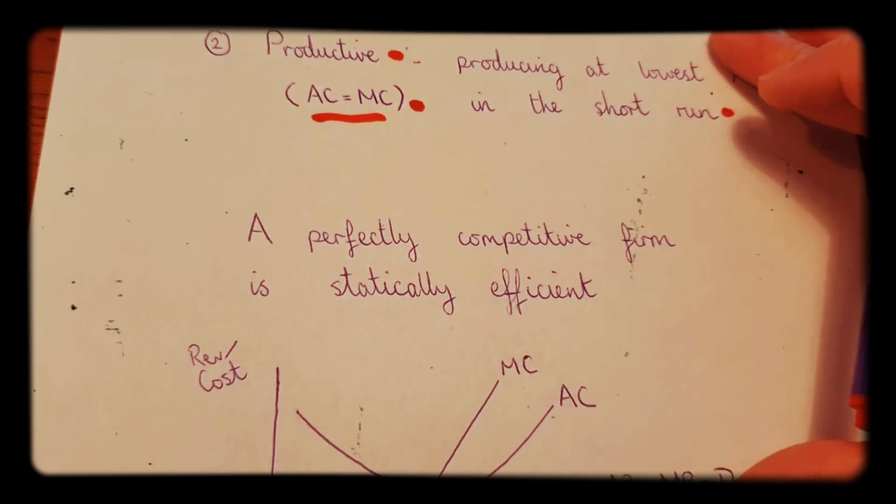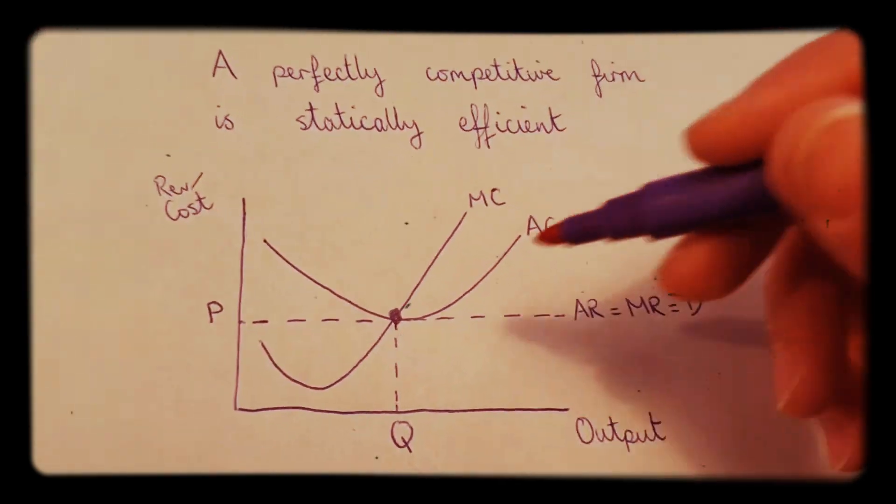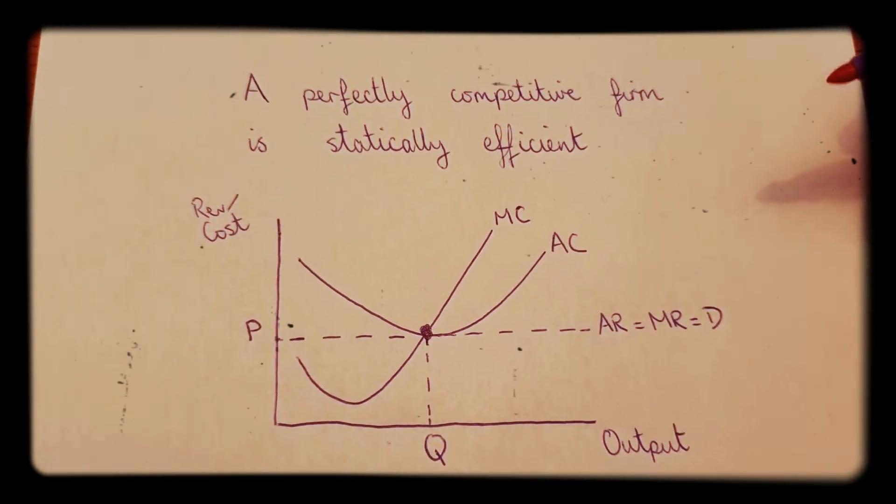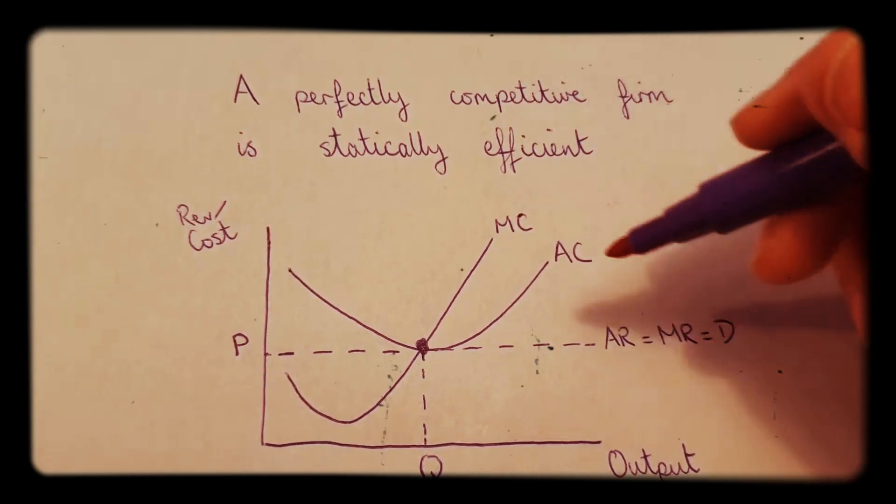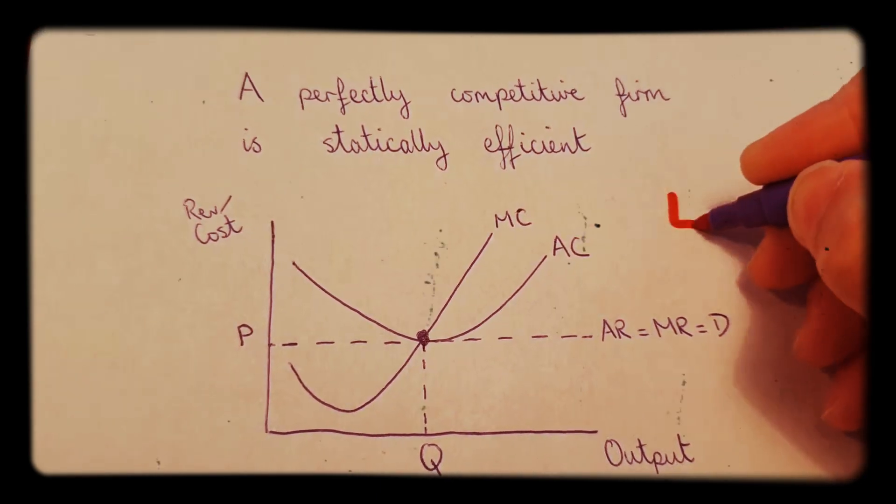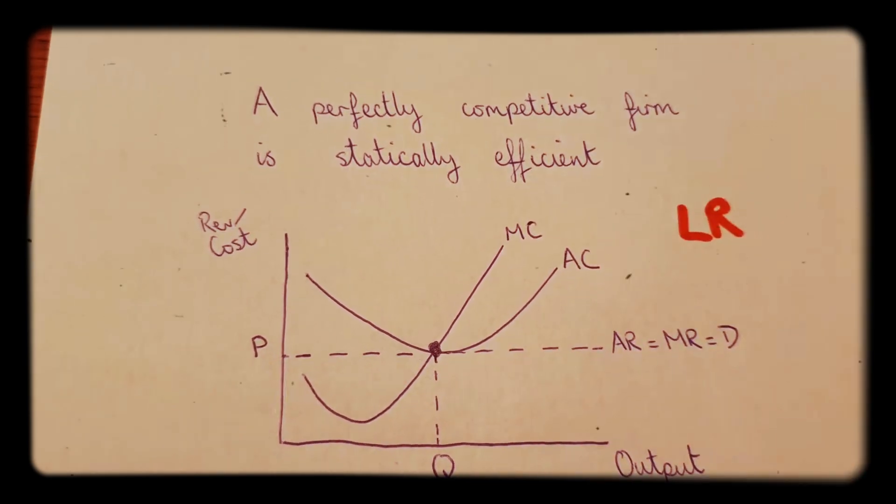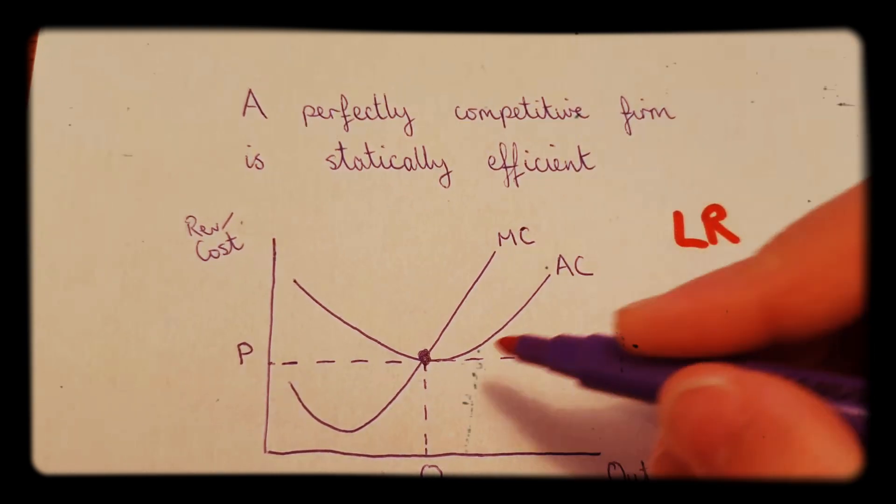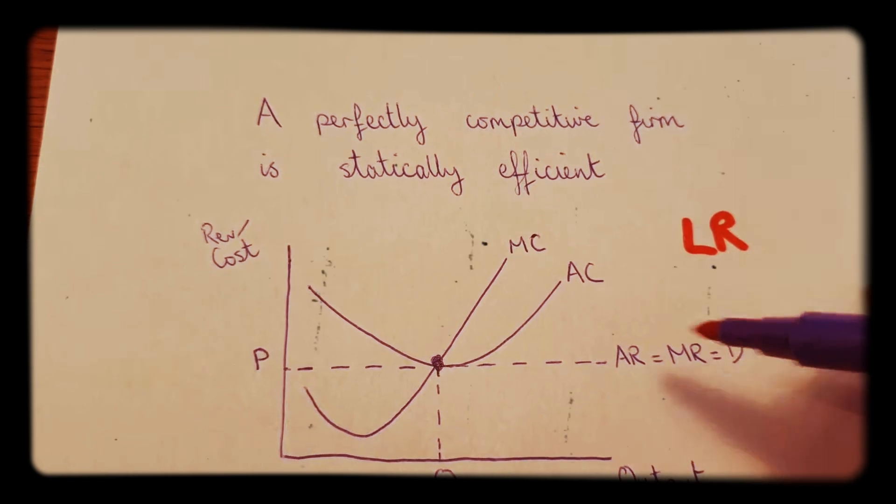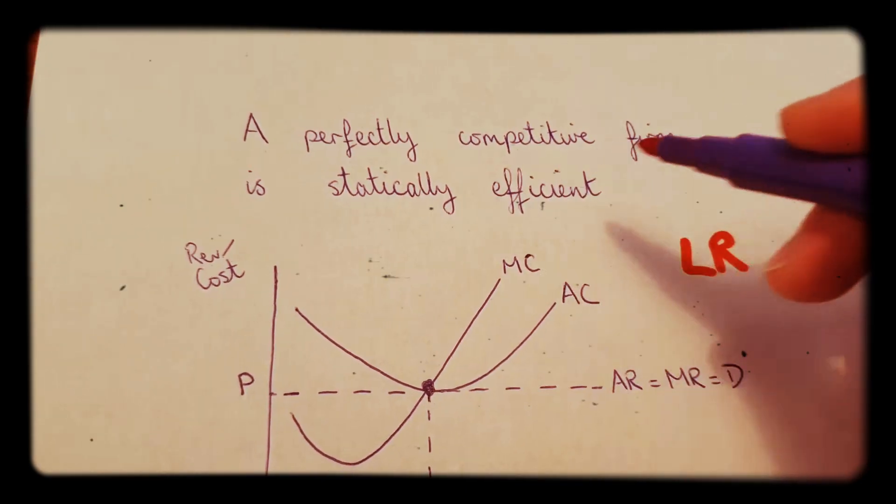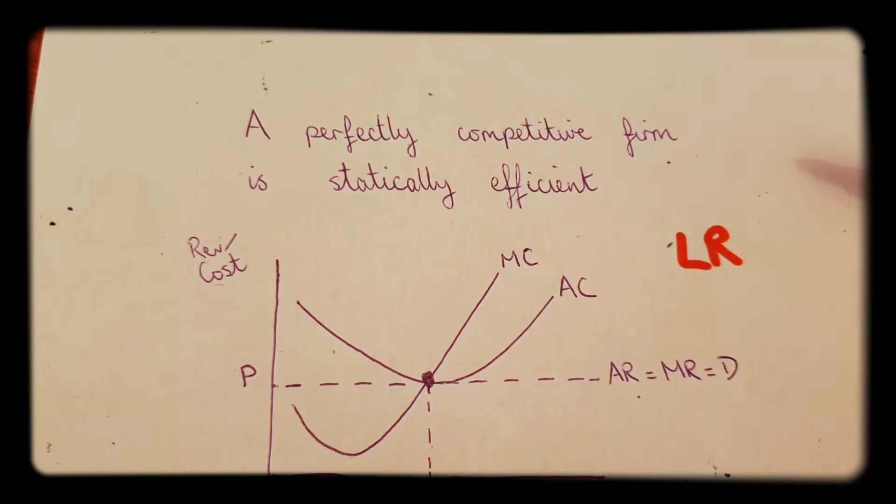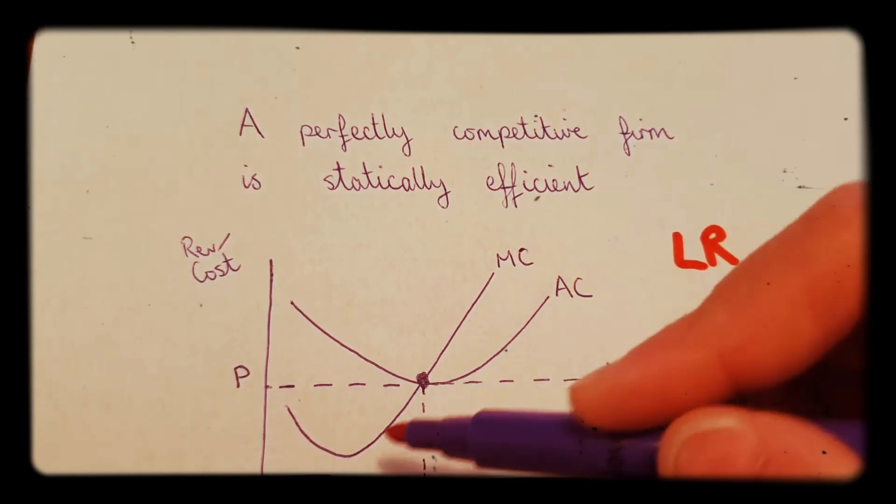Okay, so here is a perfectly competitive firm or perfect competition. So we have, this is in the long run, just so you know, it's a long run diagram. So we have AR equals MR equals D, which is perfectly elastic due to it being a perfectly competitive market, and you've got AC and MC.